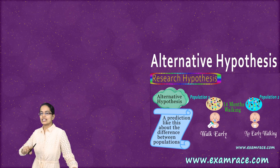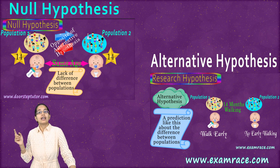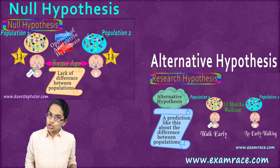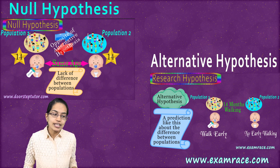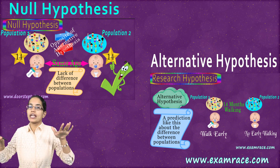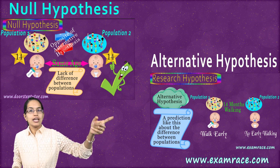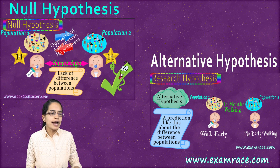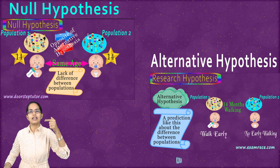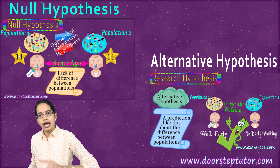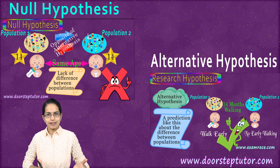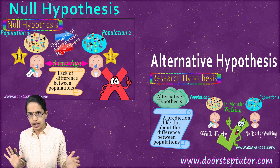We now understand the difference between an alternative hypothesis and a null hypothesis. It's very important to note that if one is true, the other has to be false. If the null hypothesis is true — that both populations start walking at the same age — I cannot say that population 1 walks early. So if my null hypothesis is true, that means my alternate hypothesis is false, and vice versa: if my alternate hypothesis is true, my null hypothesis comes to be false.